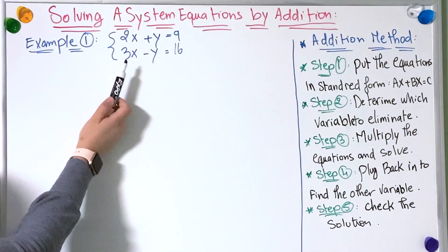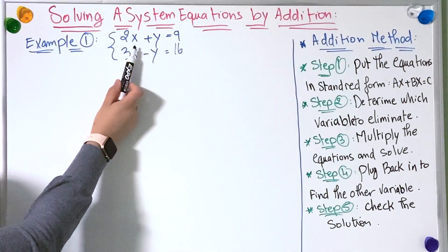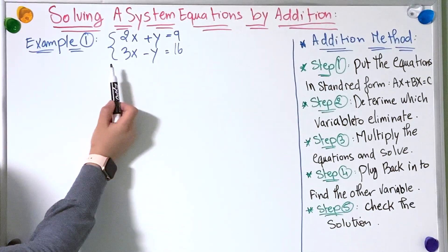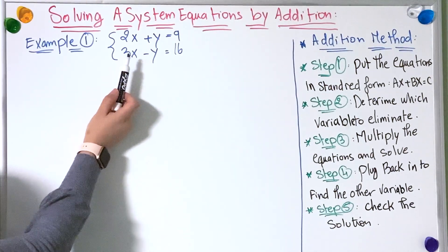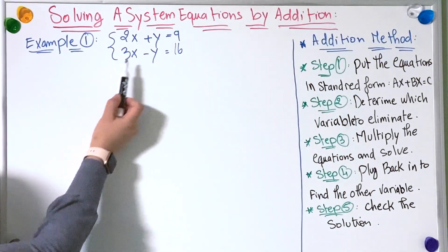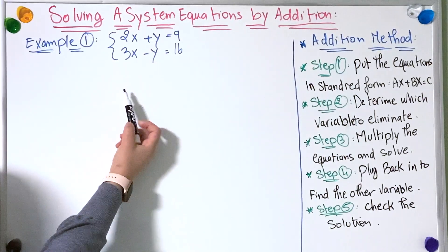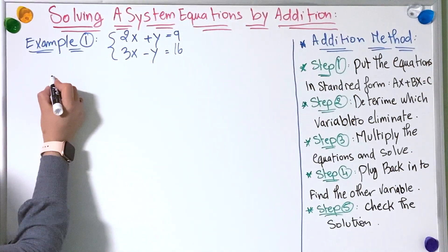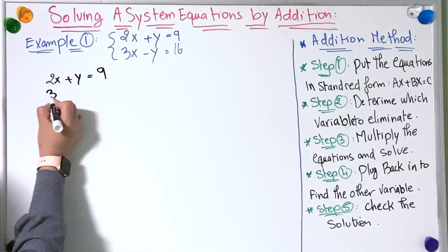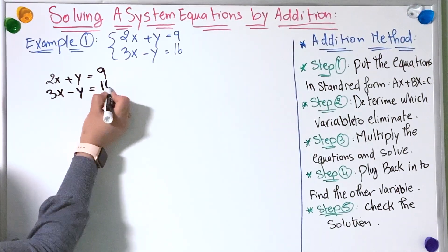To solve this example we're going to follow the steps. We have 2x plus y equals 9, and 3x minus y equals 16. They are both in standard form, so now I'm going to choose which variable to eliminate. I'm going to choose y because it's the easiest one.